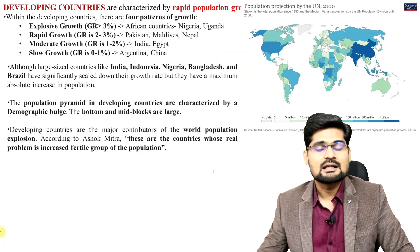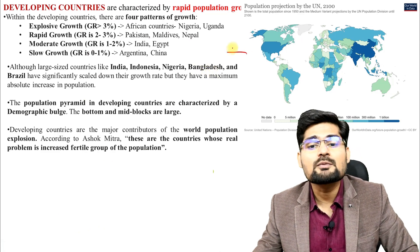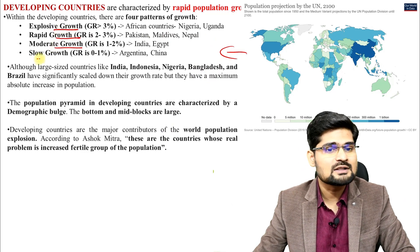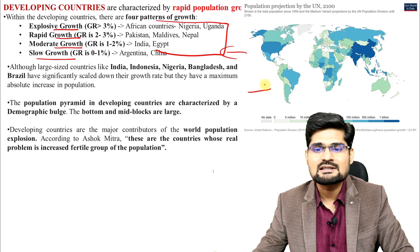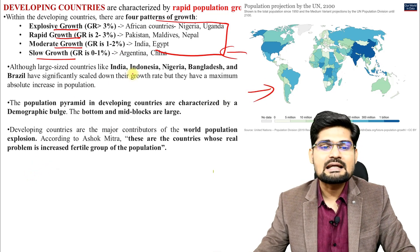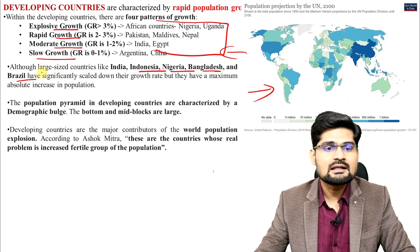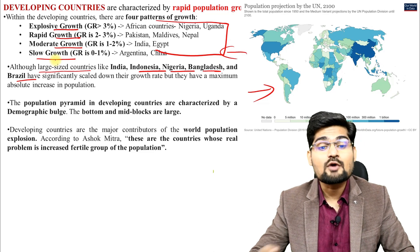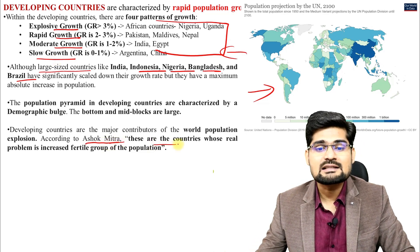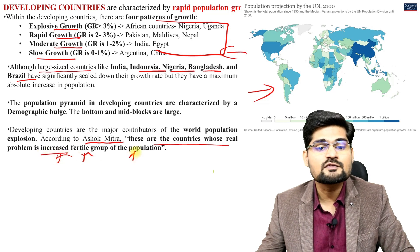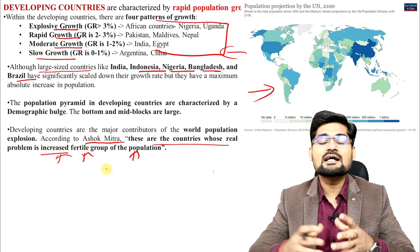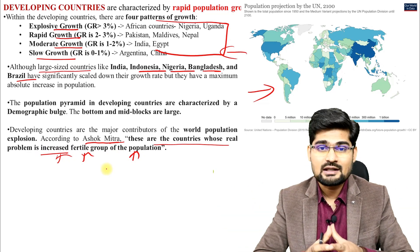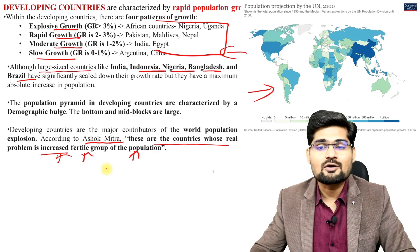Developing countries have a lot of problems because of overpopulation — just opposite of developed countries. Growth patterns range from explosive to rapid, moderate, and slow. Countries like India, Indonesia, Nigeria, Bangladesh, and Brazil are large-size countries with significantly higher growth rates. According to Ashok Mitra, these are countries whose real problem is the increased fertile group of the population — the 15 to 60 age group, which is the working population — so large in numbers that it is creating problems across developing countries.